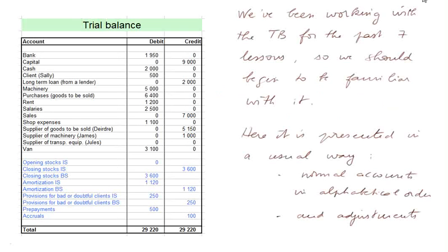From the adjusted trial balance to the income statement. We've been working with the trial balance for the past seven lessons, so we should begin to be familiar with it. Here it is presented in the usual way with the normal accounts in alphabetical order and then the adjustments.